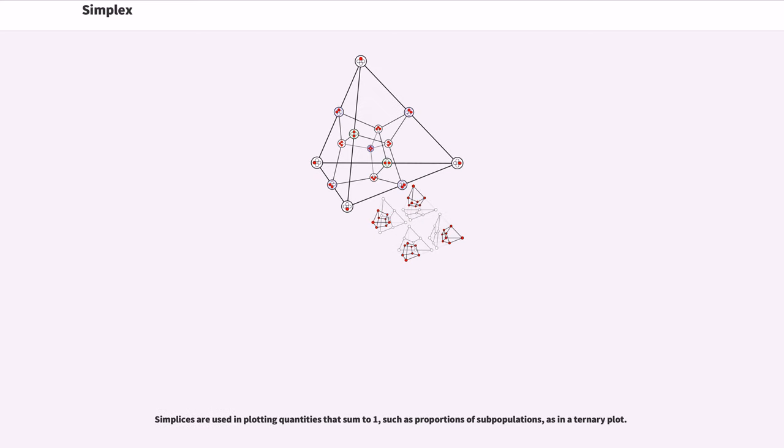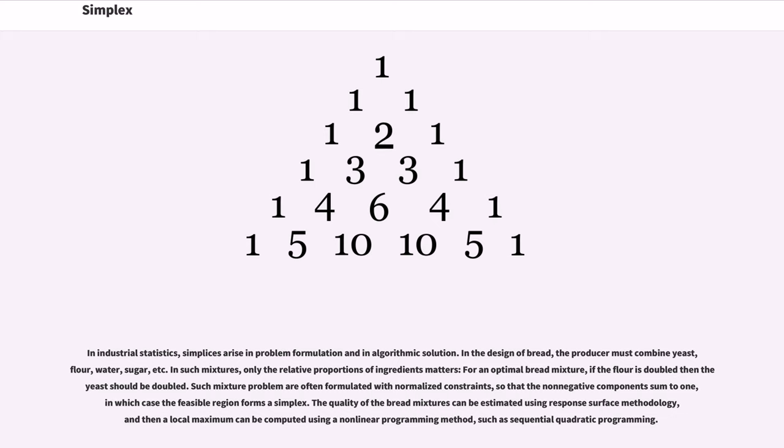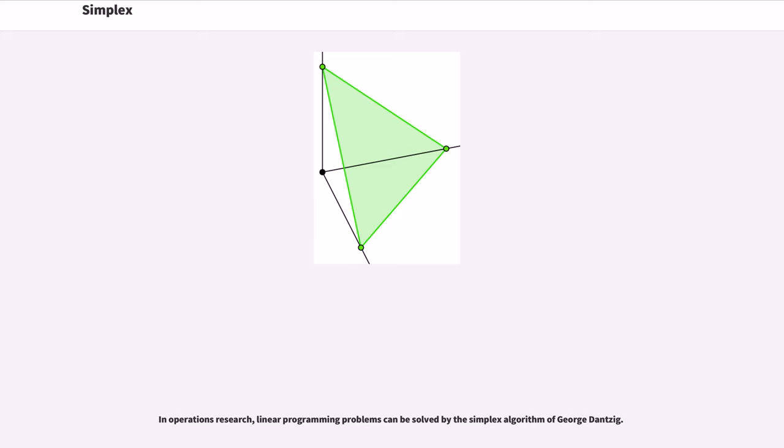Simplices are used in plotting quantities that sum to one, such as proportions of subpopulations, as in a ternary plot. In industrial statistics, simplices arise in problem formulation and algorithmic solution. In the design of bread, the producer must combine yeast, flour, water, sugar, etc. In such mixtures, only the relative proportions of ingredients matters. For an optimal bread mixture, if the flour is doubled then the yeast should be doubled. Such mixture problems are often formulated with normalized constraints, so that the non-negative components sum to one, in which case the feasible region forms a simplex. The quality of the bread mixtures can be estimated using response surface methodology, and then a local maximum can be computed using a non-linear programming method, such as sequential quadratic programming. In operations research, linear programming problems can be solved by the simplex algorithm of George Dantzig.